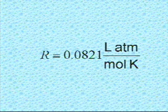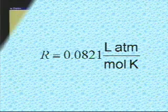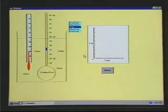In the computer simulation, you will measure the volume in milliliters, so you will need to convert to liters. Also, you will measure the temperature in degrees Celsius, so you will need to convert to Kelvin. The pressure will be constant in this experiment. The value of the pressure will be provided on the blackboard in the laboratory.